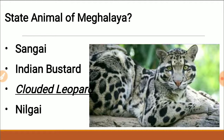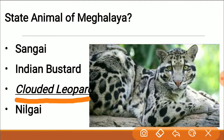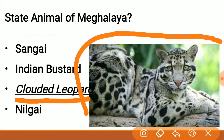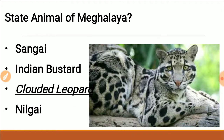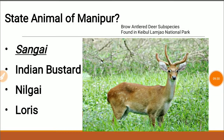We have now come to the section on state animals of all the northeastern states. The state animal of Meghalaya is the clouded leopard — a magnificent animal. Pictures are included to help you remember.